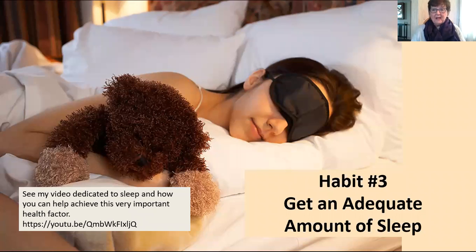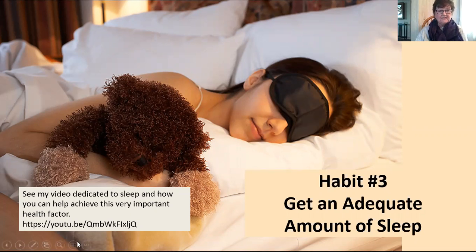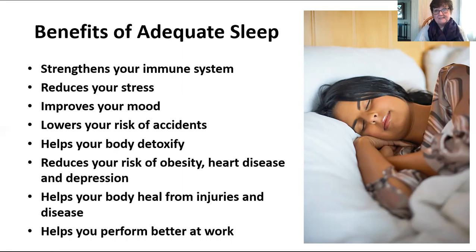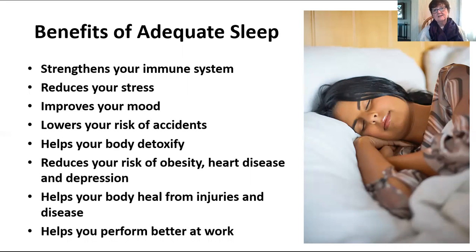Habit number three is getting adequate sleep. I have a video all about sleep and how you can achieve better sleep — I've linked it here and in the description below. Your body depends on sleep for healing. It strengthens your immune system, reduces your stress, improves your mood. You can be pretty cranky if you haven't had enough sleep. It lowers your risk of accidents, helps your body detoxify. Your brain actually shrinks a bit during sleep so it can wash — your lymphatic system goes in there and gets rid of toxins in the brain area, but only if you're asleep for a certain amount of time. It reduces your risk of obesity, heart disease, and depression.